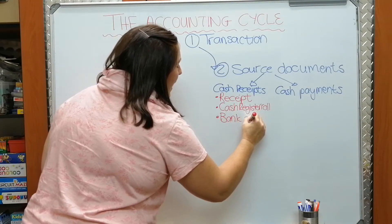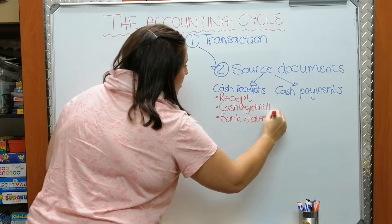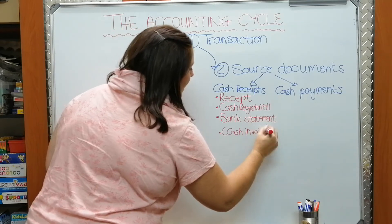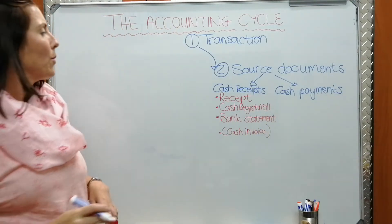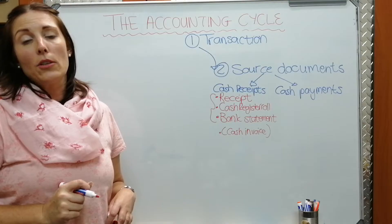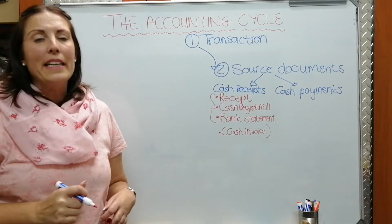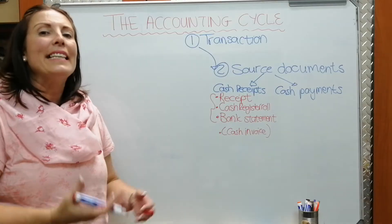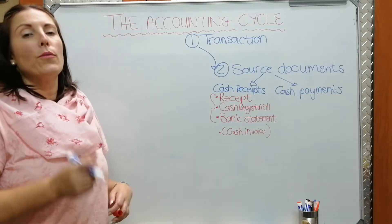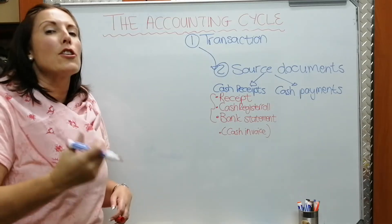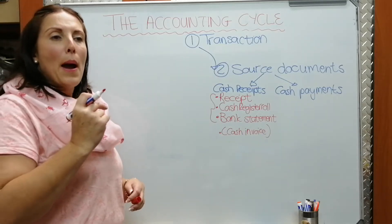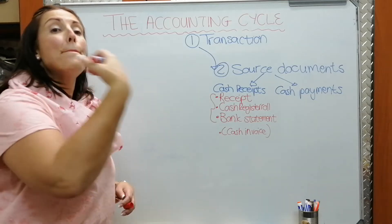We also have the cash invoice, though in Grade 8 we don't really work with that. The three main source documents — receipt, cash register roll, and bank statement — are the ones we use most in Grade 8 accounting for recording cash receipts, money that the business has received.